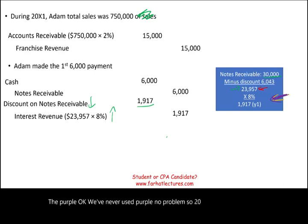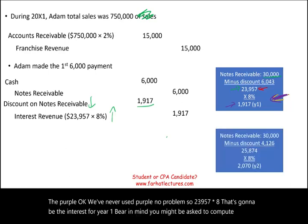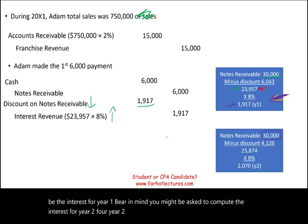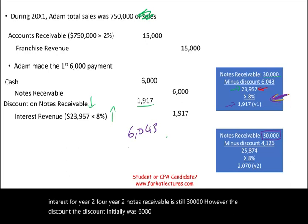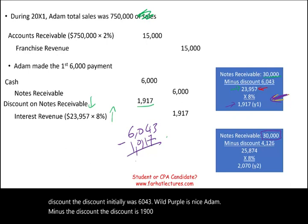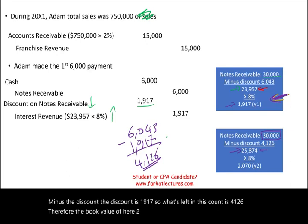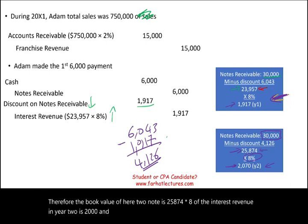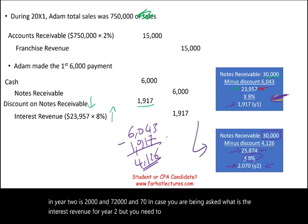$23,957 times 8% gives interest revenue for year one. For year two, notes receivable is still $30,000; however, the discount was initially $6,043 minus $1,917 already recognized, leaving a remaining discount of $4,126. Therefore, the book value of the note in year two is $25,874. Multiplying $25,874 times 8%, the interest revenue in year two is $2,070. You need to be familiar with how to compute interest revenue from notes receivable.